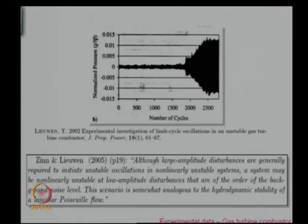This book was published in 2005, before we came up with the theory of non-normality. He is talking about low amplitude disturbances. Generally triggering was perceived to be caused by high amplitude disturbances, but people who did experiments noticed that you can see it at low amplitude disturbances. This scenario is somewhat analogous to hydrodynamic instability in a laminar Poiseuille flow.